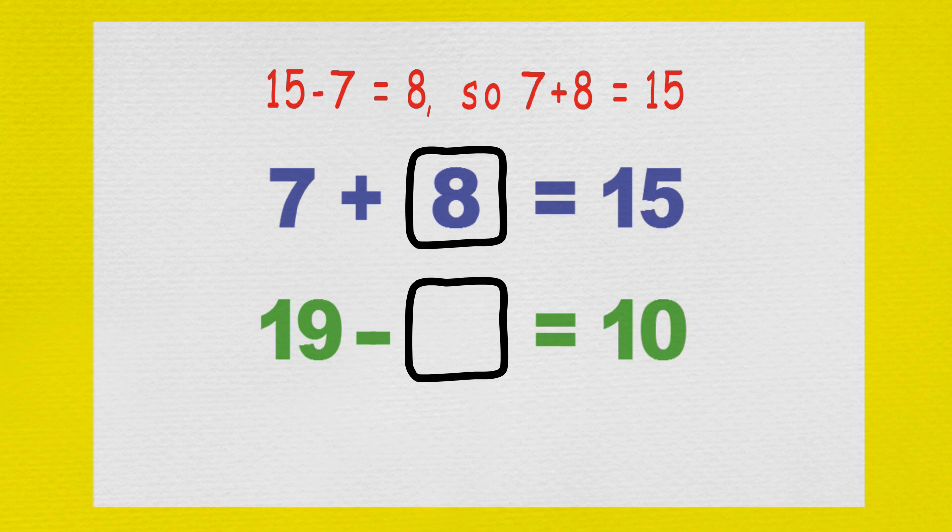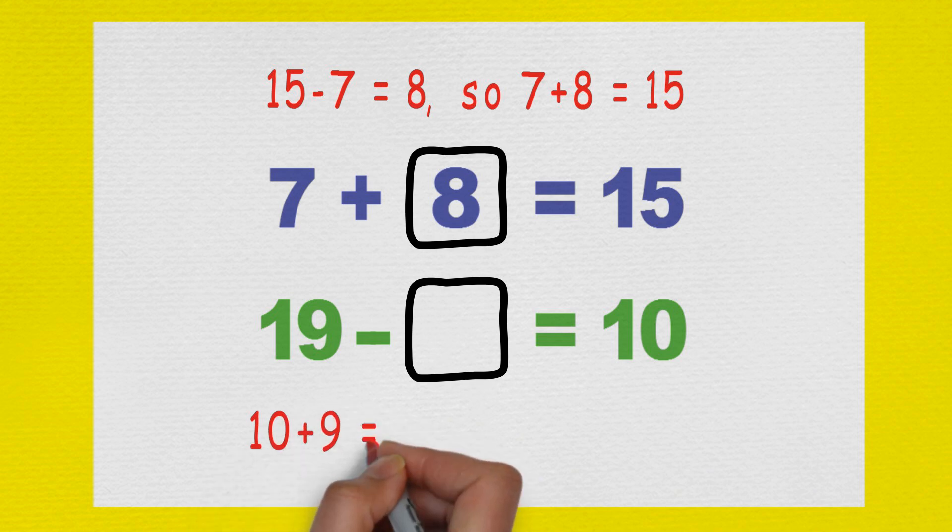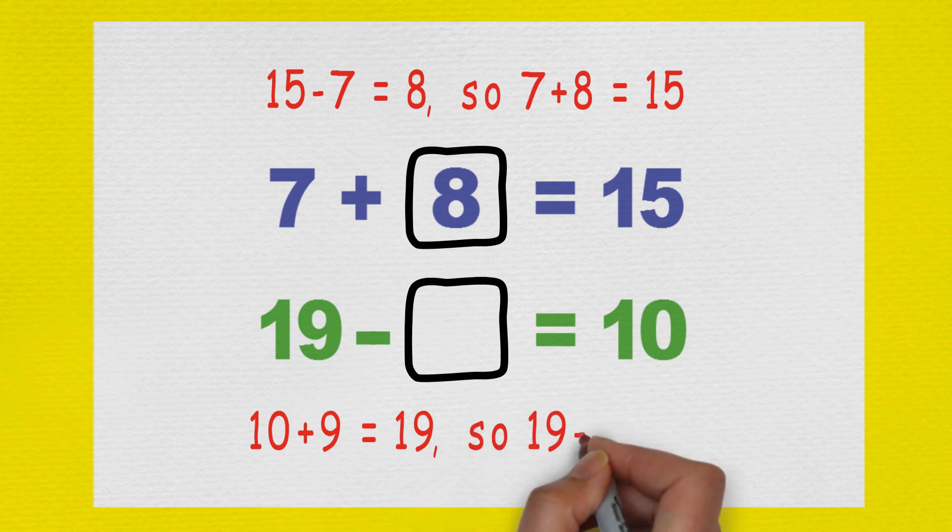Then Max looked at the second number sentence. I know that ten plus nine equals nineteen, so therefore, nineteen minus nine equals ten, so the value of the box this time must be nine.